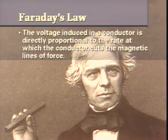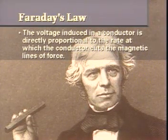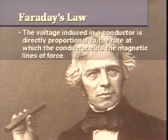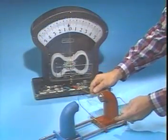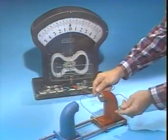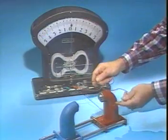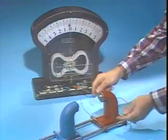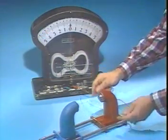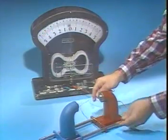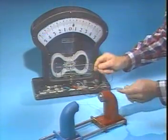From this law, we can derive the four different ways to increase the rate at which the conductor cuts the magnetic lines of force. The most obvious way is simply to speed up the rate at which we move the conductor through the magnetic field. The faster the conductor moves through a magnetic field, the more lines get cut per second, and more EMF is induced.